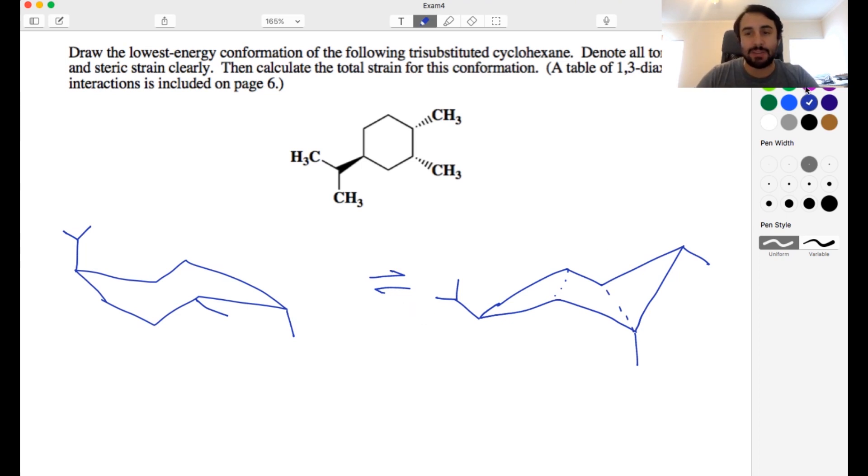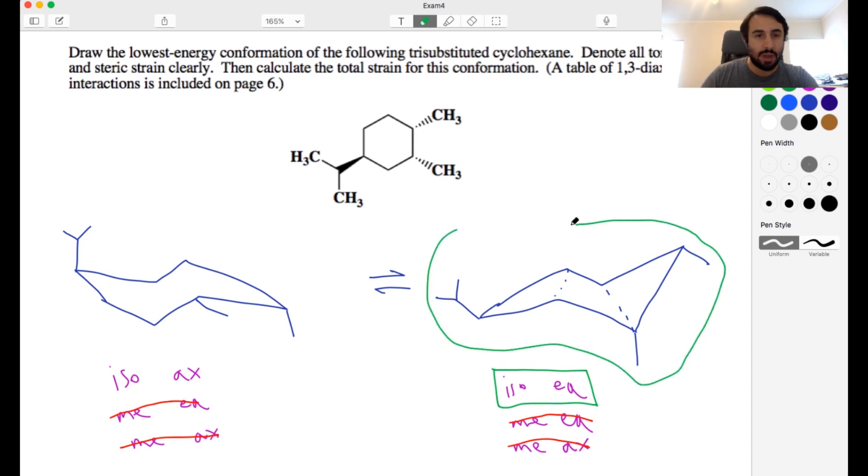And so now we want to talk about stability. Over here we have an isopropyl axial and then we have methyl that is equatorial and methyl that is axial. Over here we have isopropyl equatorial and then we have a methyl that is equatorial and a methyl that is axial. And so what we're seeing is that in each case we can cancel these out. Methyl equatorial, methyl axial. Each one of them has those two things so that aspect is equivalent. And so certainly what wins is the one that has the isopropyl that is equatorial versus axial. So this is clearly the more stable conformation or the lowest energy conformation of the two chair conformations for this tri-substituted cyclohexane.